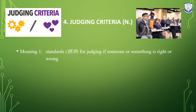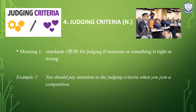Number four: 'judging criteria'. It is a noun. The meaning is standards for judging if someone or something is right or wrong. Example: You should pay attention to the judging criteria when you join a competition. You may think of it as similar to the word 'rules', but these criteria are especially important when there are judges in a competition — people with knowledge and authority who decide whether you win, following certain standards. Those standards are the judging criteria.